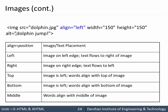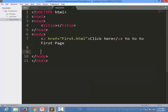We can also specify the alignment of the image. Similar to paragraphs where we had left, right, and center, images have five alignment options: left, right, top, bottom, and middle. Let's see an example of the IMG tag.